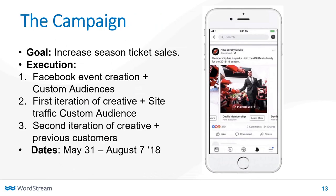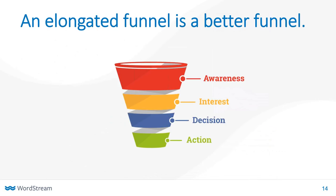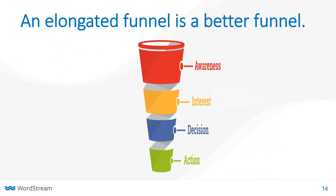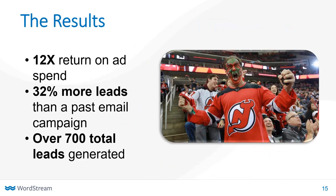They layered location targeting. We have all the information on customer lookalikes, how to create carousel lead ads, on our blog. The main thing to highlight is that the Devils executed a lengthy conversion path — they didn't just advertise season tickets to target audiences. They created events, collected leads to send people to those events, and sent emails. By lengthening the path to conversion and further qualifying prospects at each stage, they got better results: a 12x return on ad spend, 32% more leads than a past email campaign, and over 700 total leads. Massive ROI.